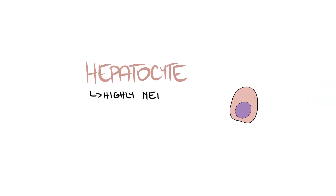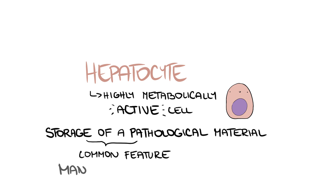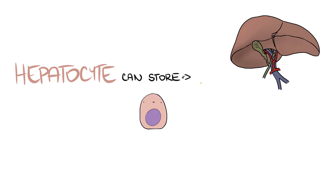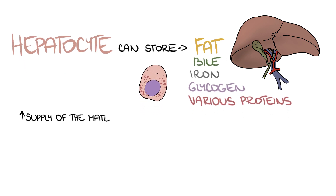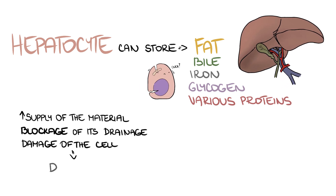The hepatocyte is a highly metabolically active cell. Storage of pathological material is therefore a common feature for many liver diseases. Hepatocytes can store miscellaneous substances such as fat, bile, iron, glycogen, or various proteins. The reason can be an increased supply of the material, blockage of its drainage, or damage to the cell itself, leading to cell dystrophy.